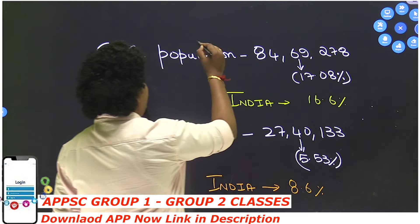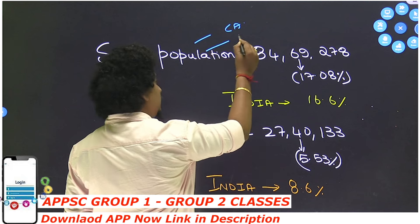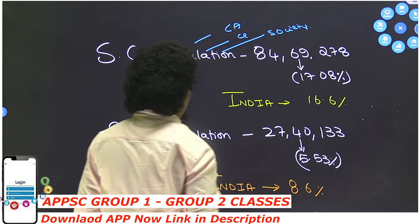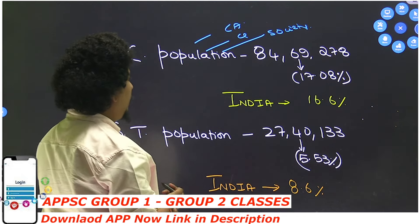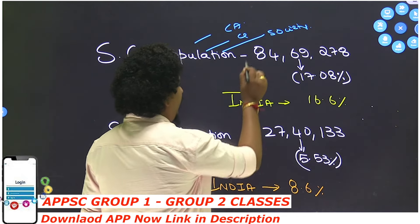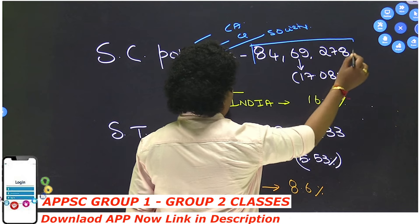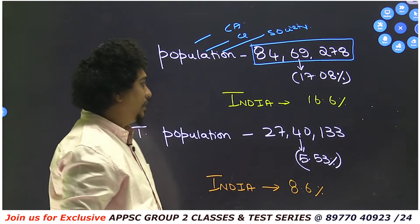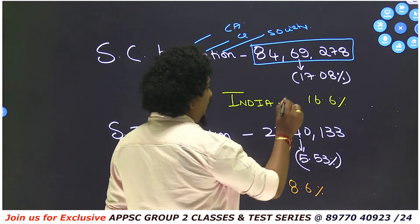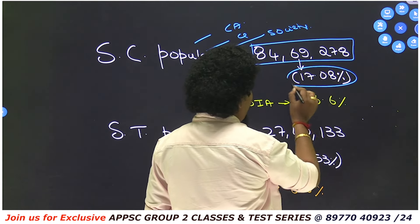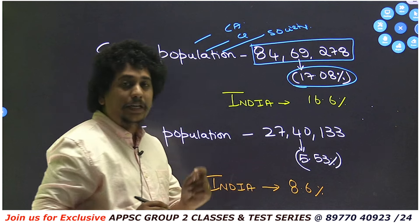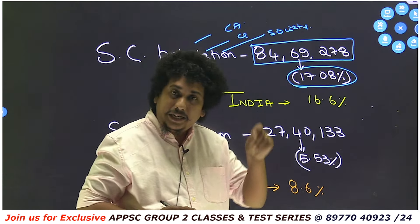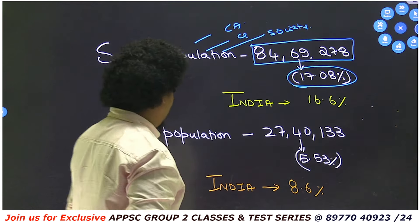This is very important data covering current affairs, geography, and society related to Andhra Pradesh. The total population of Andhra Pradesh is 84,69,278. This means 17.08% of the population in Andhra Pradesh are Scheduled Caste (SC) population.